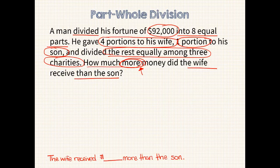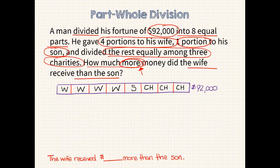Since this is a division problem, I should start out with my whole. So I drew 1 unit bar to represent $92,000. Next we are told that it was divided into 8 equal sized pieces, so this is what it looks like now. Now I'll designate each unit to their respective recipients. His wife gets 4 units, his son gets 1, and the remaining 3 go to charity.